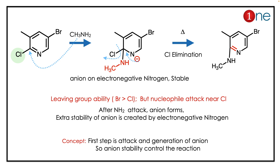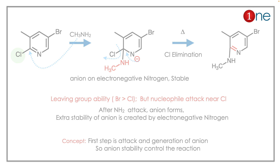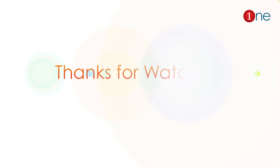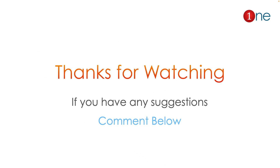But the attack actually happens at chlorine, because of extra stability. When amine attacks the chlorine position, an anion is formed and that anion is stabilized by the electron-withdrawing nitrogen, making it stable. So the reaction proceeds that way — chlorine elimination occurs, amine substitution happens, and the final product is the second-position substituted amine. The key concept here is that whenever you have an intermediate, intermediate stability dictates the reaction and selectivity.